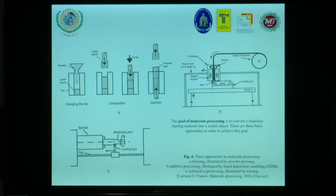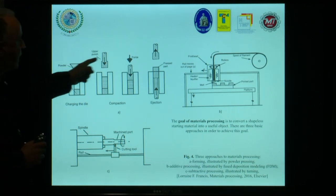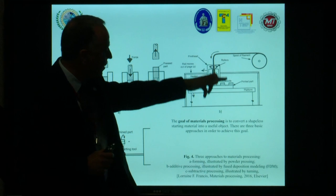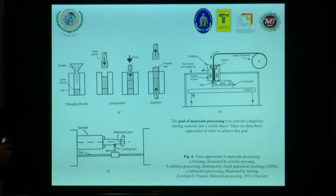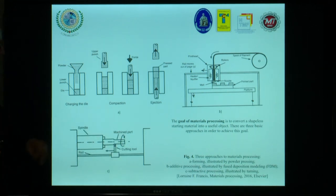The goal of material processing is to convert shapeless starting material into a useful object, a useful part. There are three basic approaches to achieve this goal. The first one is forming, illustrated by powder pressing. The second one is additive manufacturing — additive processing — illustrated by 3D printing. And the last one is subtractive processing, illustrated by turning.